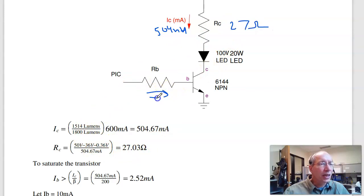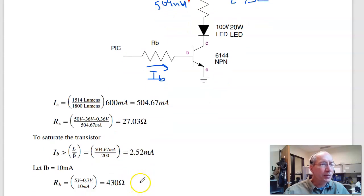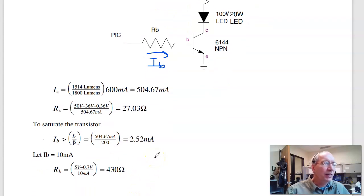So for the base current IB, there's a lot of room for slop for that. I just want to make sure that IB is greater than IC over beta. So divide IC by beta, divide by 200. IB has to be at least 2.52 milliamps. It can't be more than 25 milliamps, because that's all a PIC can do. So pick a number bigger than 2.52, less than 25. I chose 10.